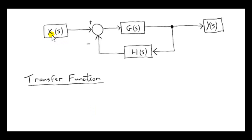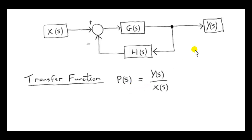Here is our negative feedback loop. x(s) is the input, y(s) is the output. The transfer function is given by the output y(s) over the input x(s). At this summing point, x(s) is added in. Let's suppose that the output at this summing point is called y1(s).